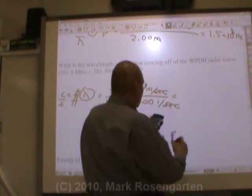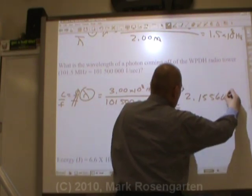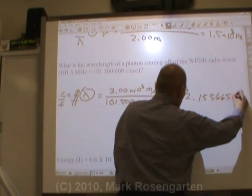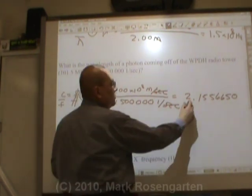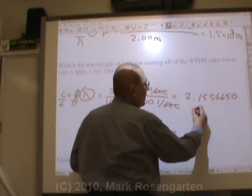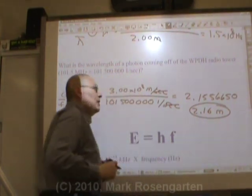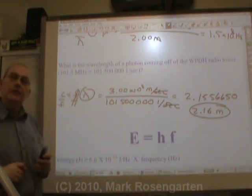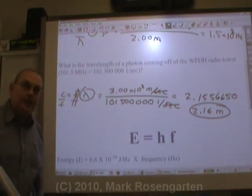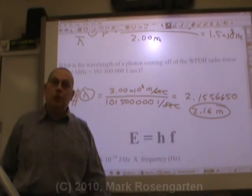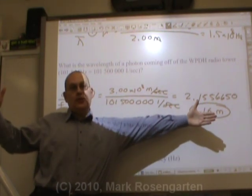This gives us 2.9556650 meters, which rounded to 3 significant figures is 2.96 meters. That would be the wavelength of the signal coming off the tower. So if you could actually see the WPDH signal coming towards you, each wavelength would be a little bit more than 2 meters in length.